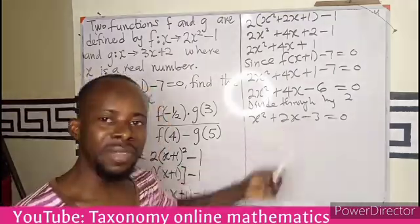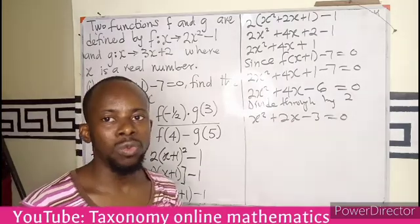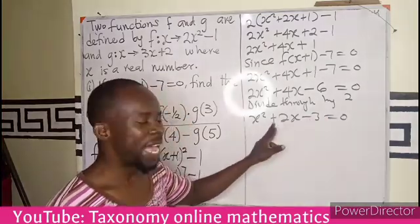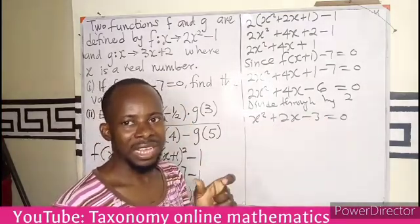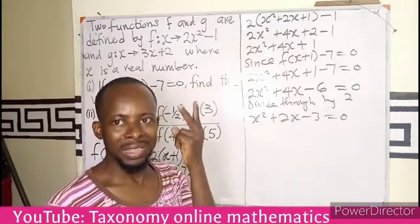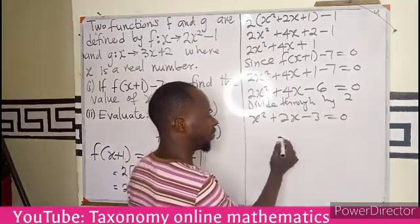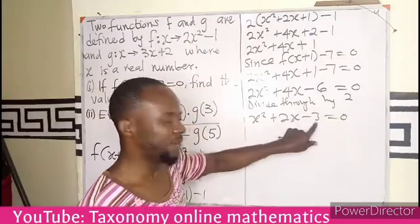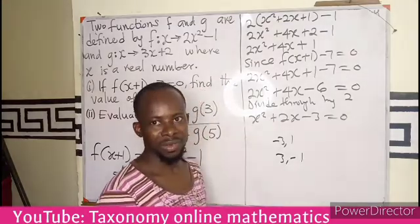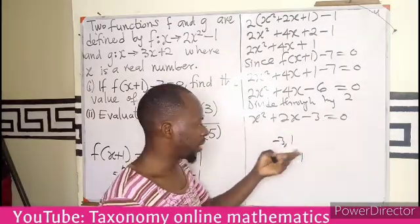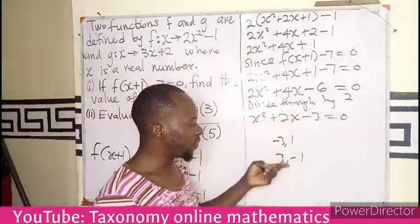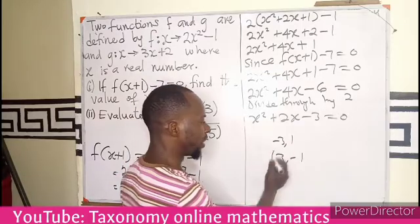We look for factors of negative 3 that when added give us 2. The moment the constant is negative and the middle term is positive, it means the smallest factor must be negative. Among the two factors, one must be negative — the smallest one. Factors of 3 are just 3 and 1. If I need negative 3, either 3 or 1 is negative. If I use negative 1: multiply to get negative 3, add to get positive 2. So these are my factors: 3 and negative 1.